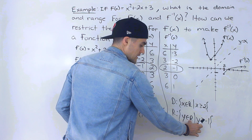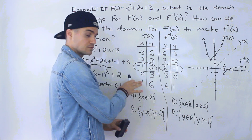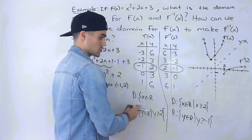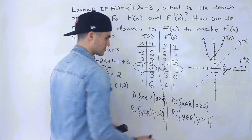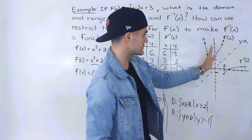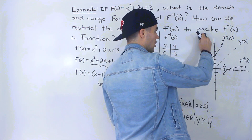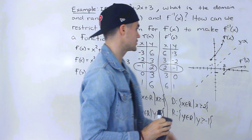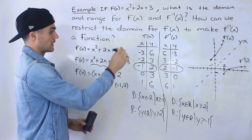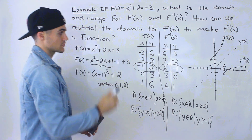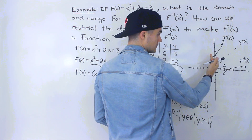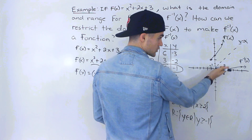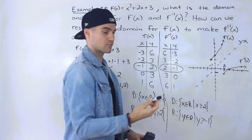The range of the inverse relates to the domain of the function. So restricting the range of the inverse to y ≥ −1 means we must restrict the domain of the function to x ≥ −1. Graphically, all x-values less than −1 for the function are removed. The restricted function and the restricted inverse are then reflections of each other, and the inverse now passes the vertical line test.